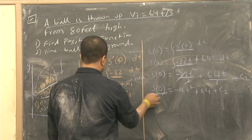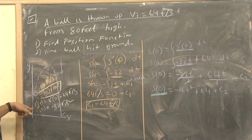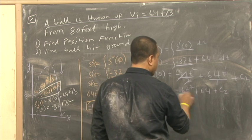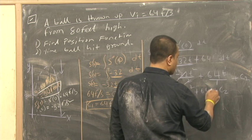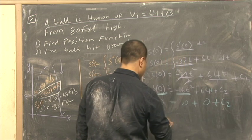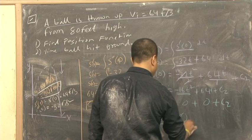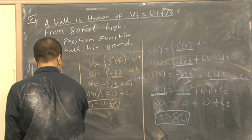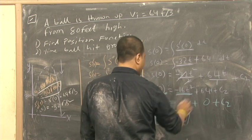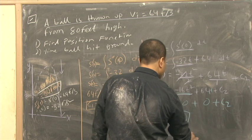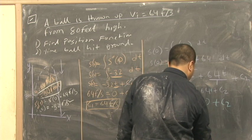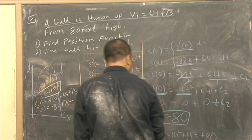So what is c2? S of 0 is actually 80 feet. So 80 equals 0 plus 0 plus c2. So c2 is actually 80. 2 goes into 32, which is 16. So minus 16t squared plus 64t plus 80. This is our position function.